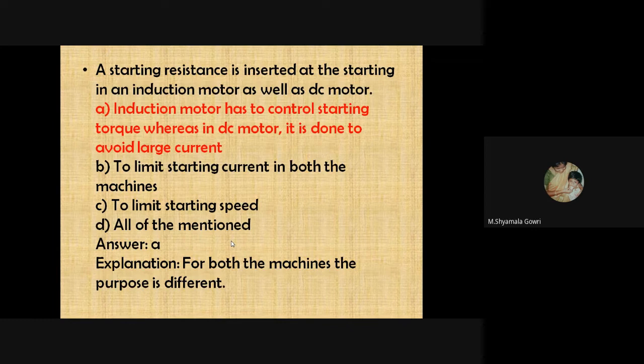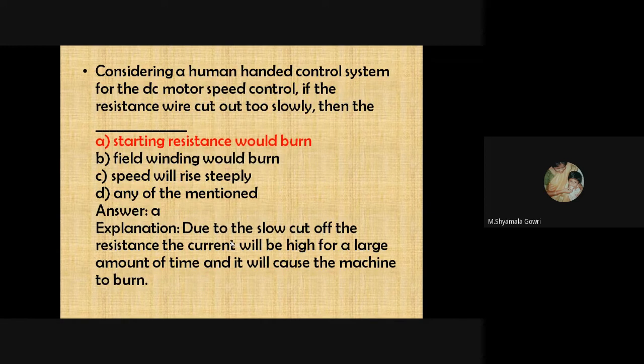A starting resistance is inserted at starting in both induction motors and DC motors. In an induction motor it is used to control starting torque, whereas in a DC motor it is done to avoid large starting current. In a hand-operated control system for DC motor speed control, if the resistance wire is cut out too slowly, the current remains high for a long time and will cause the starting resistance to burn.